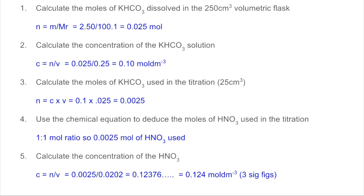So the moles of potassium hydrogen carbonate dissolved in the volumetric flask at the start is mass over MR. So you can see we've got this many moles. As a concentration, that's these moles divided by the volume they're in. Remembering the volume must be in decimetres cubed. And so we get this.